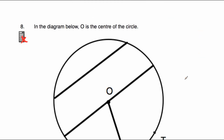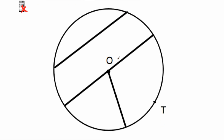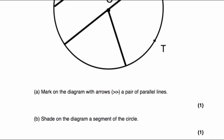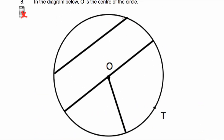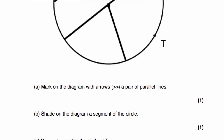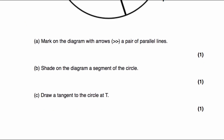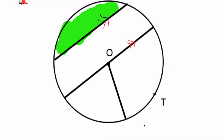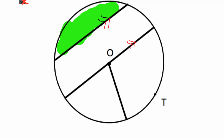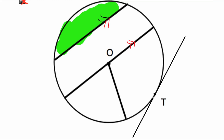Question eight gives us a diagram with a chord, a diameter, and two radii, with point T on the circle and O as the centre. Part A: mark a pair of parallel lines — the chord and the diameter appear to go in the same direction, so we label those with arrows as parallel. Part B: shade a segment — the region bounded by the chord and an arc. Part C: draw a tangent to the circle at point T — a straight line that touches the circle once at T and carries on.